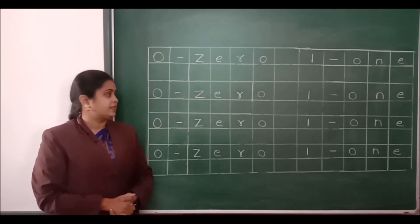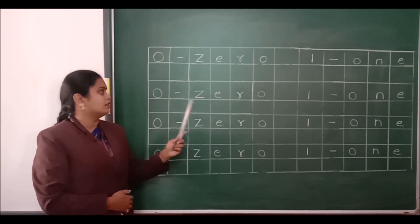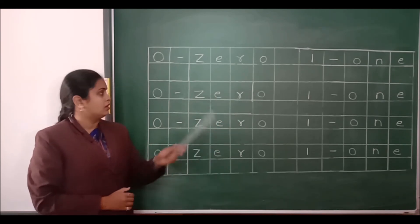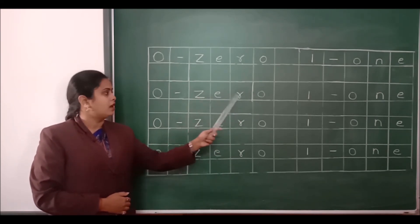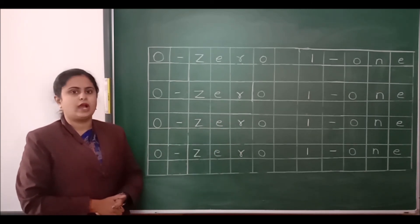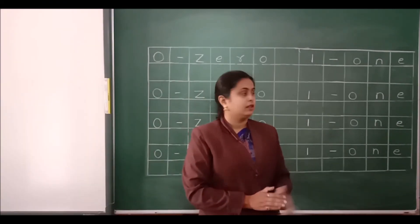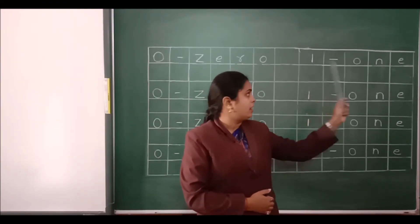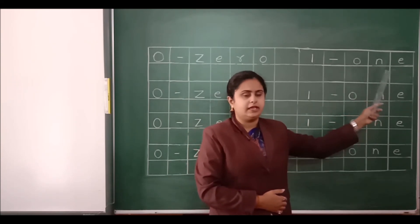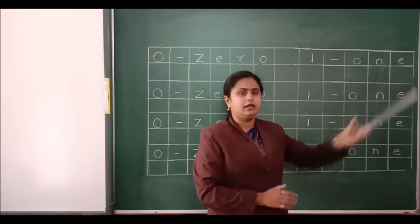Once again we will repeat. This is number 0: Z, E, R, O — zero. After 0 what will come? Number 1. Now we will look at number 1. This is the spelling of number 1: O, N, E — one.